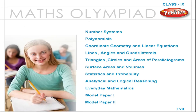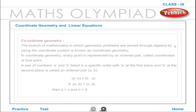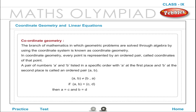Maths Olympiad Class 9: Coordinate Geometry and Linear Equations. Coordinate Geometry is the branch of mathematics in which geometric problems are solved through algebra by using the coordinate system.